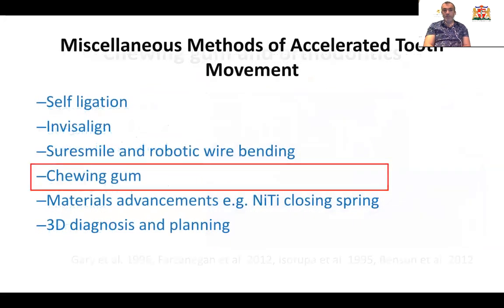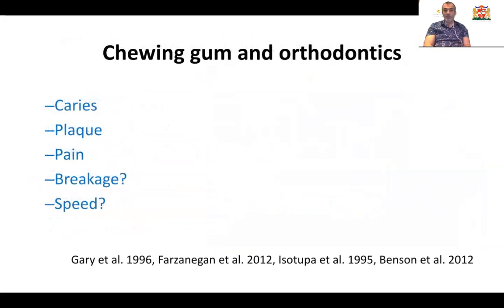What about chewing gum? There are several studies undertaken in the UK and Australia confirming that chewing gum during fixed orthodontic appliance treatment will reduce the risk of plaque and also reduce pain during the alignment phase significantly. There is no evidence that chewing gum is associated with higher breakage of fixed appliances. Unfortunately, I could not find any evidence supporting the effectiveness of chewing gum in accelerating tooth movements, meaning there is scope for future researchers to address this question.